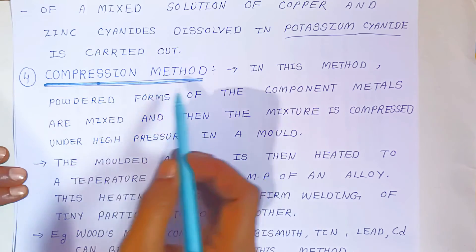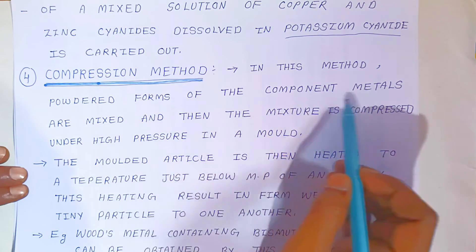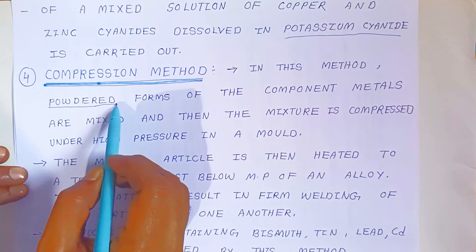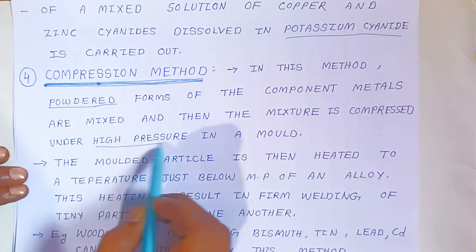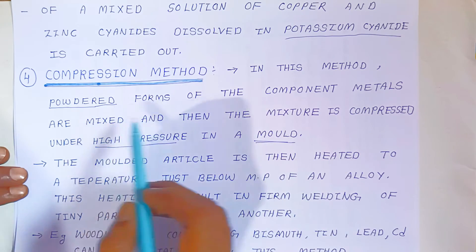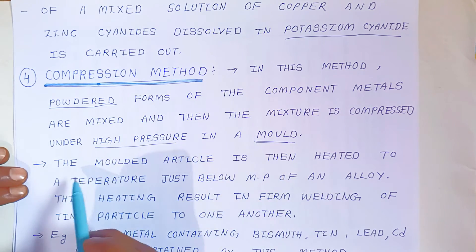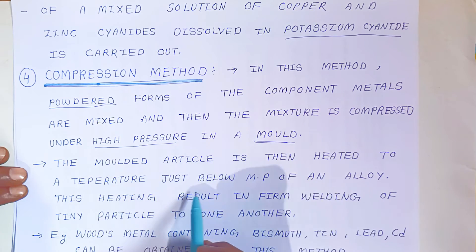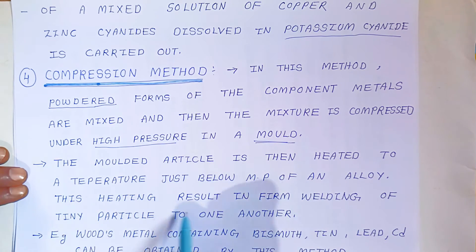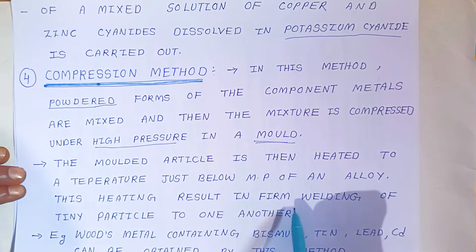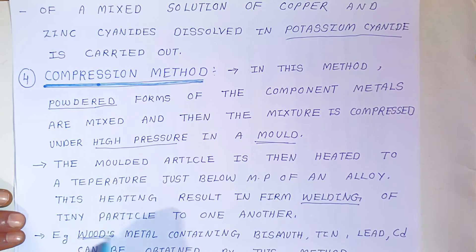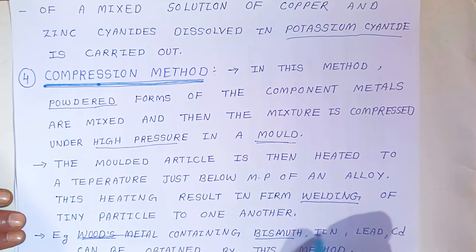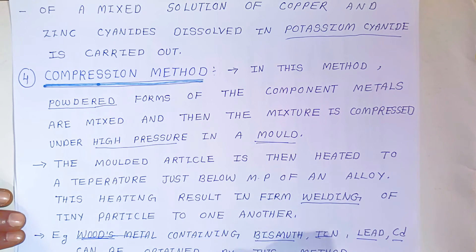The fourth method is the compression method. In this method, the powder forms of the component metals are mixed and then the mixture is compressed under high pressure in a mould. The moulded article is then heated to a temperature just below the melting point of the alloy. This heating results in the welding of the tiny particles to one another. An example is Wood's alloy, a metal alloy containing bismuth, tin, lead, and cadmium, which can be obtained by this method.